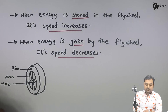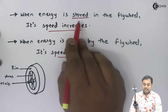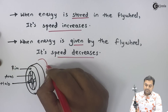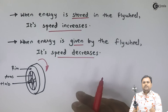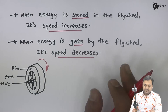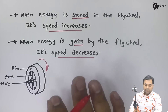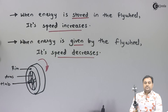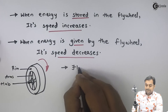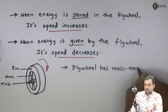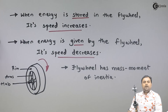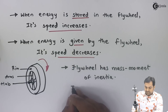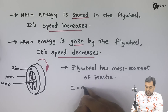When the speed is increased, the flywheel rotates at high speed; when it is giving energy, the speed decreases and goes on reducing. A flywheel is a rotating member which has mass moment of inertia, and that mass moment of inertia is given by I equals M times K squared.